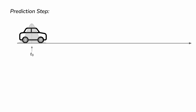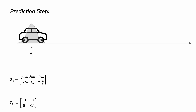Here we have the initial position of the vehicle — the initial state at time zero. We assume that the state vector we are trying to estimate has a dimension of two: the first element is the position and the second element is the velocity. At time zero, we assume the initial position is zero and the velocity is two meters per second, meaning the vehicle is moving at two meters per second. Both position and velocity are along the x-axis.